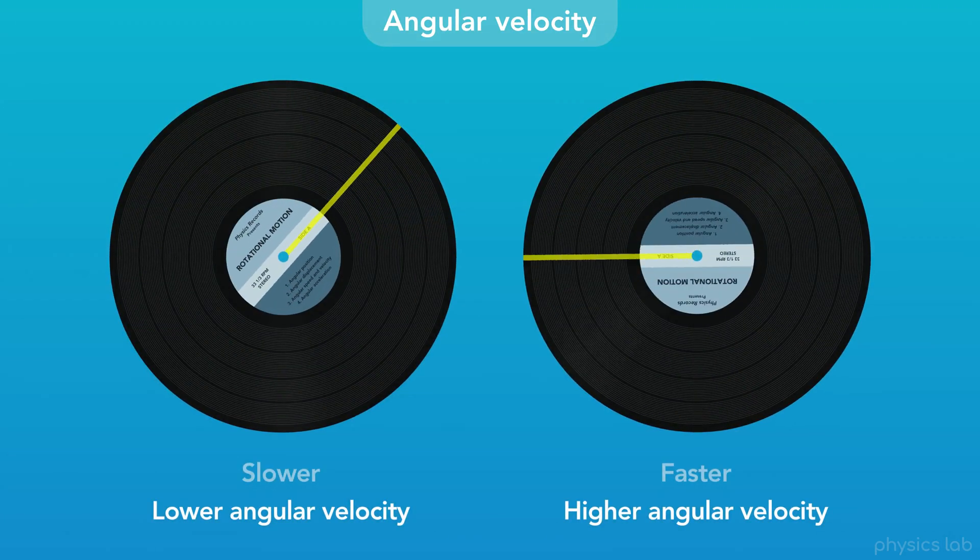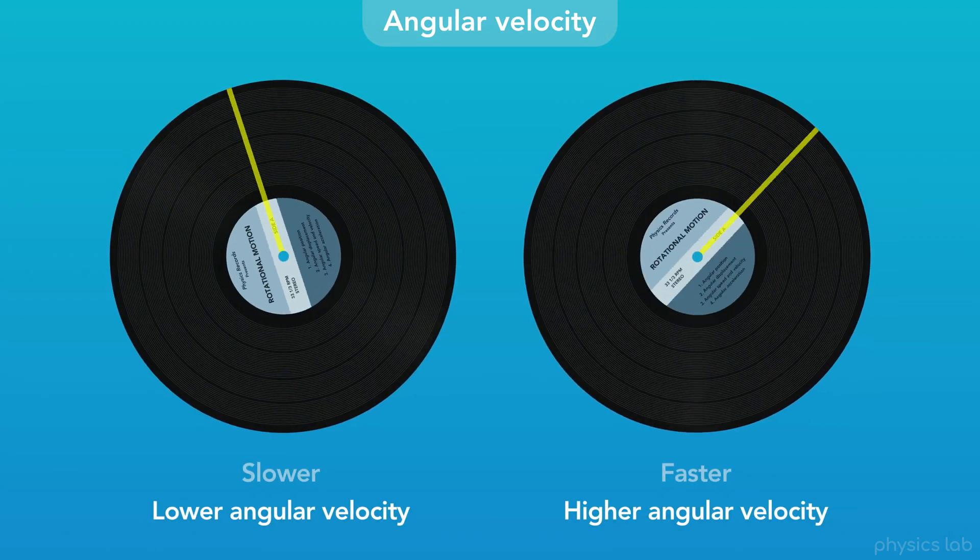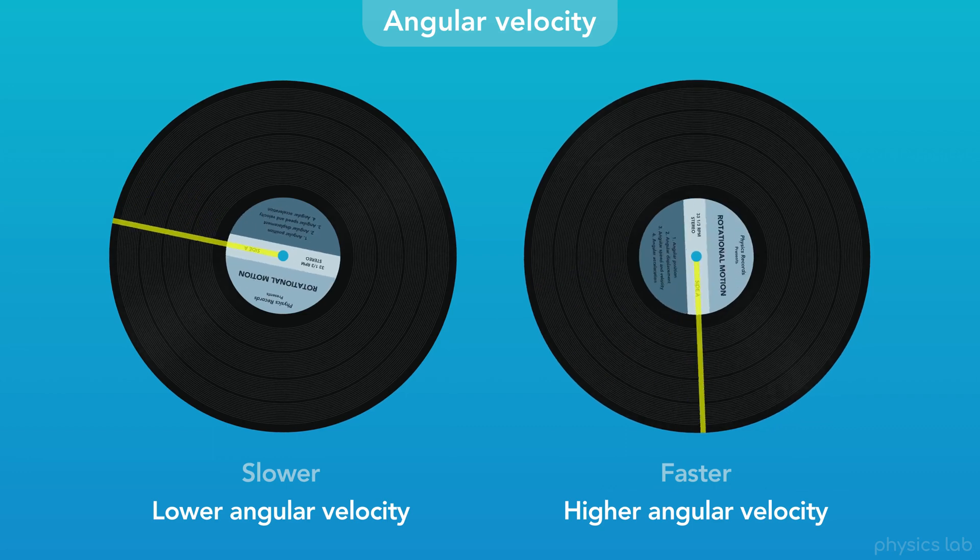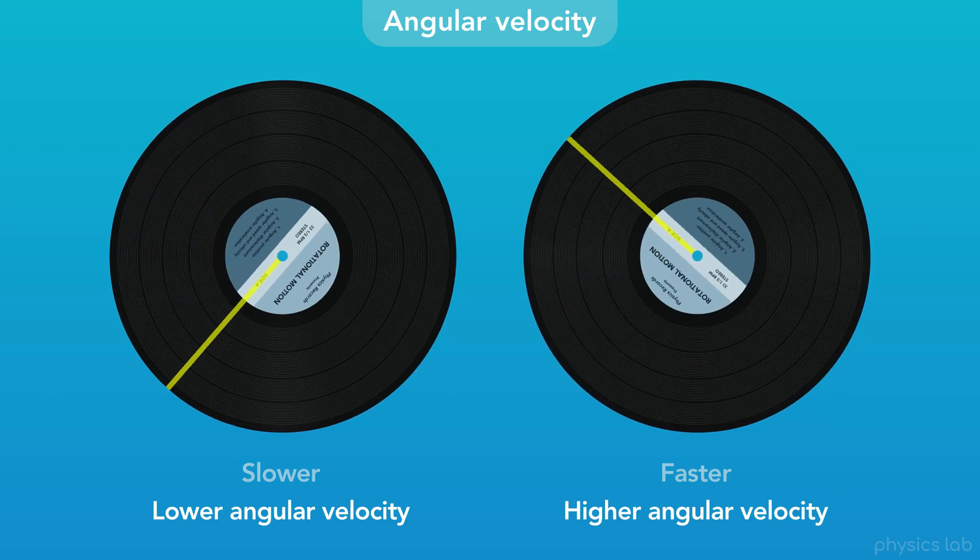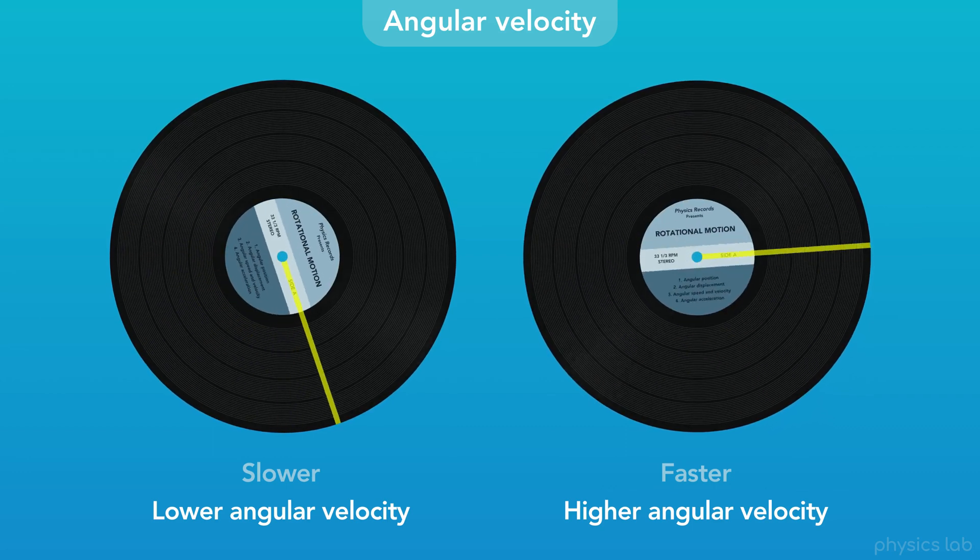Angular velocity describes how fast an object is rotating. Here we can see the record on the right has a higher angular velocity than the record on the left.